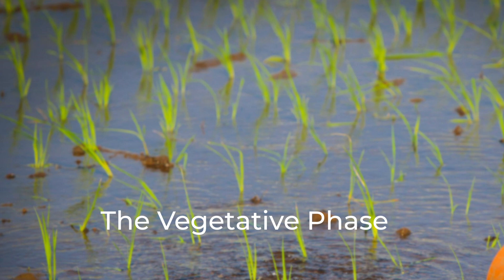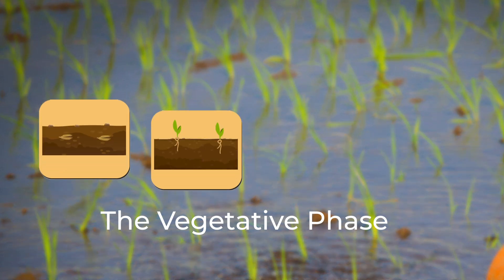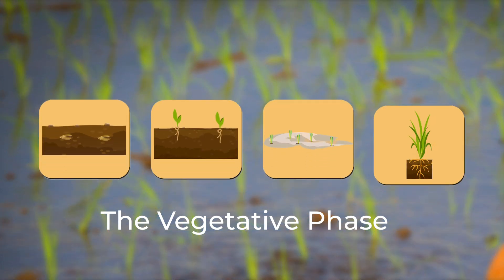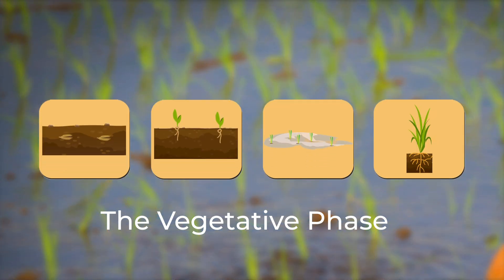The vegetative phase, where the rice plant establishes its roots and grows its leaves, laying the foundation for a healthy crop.